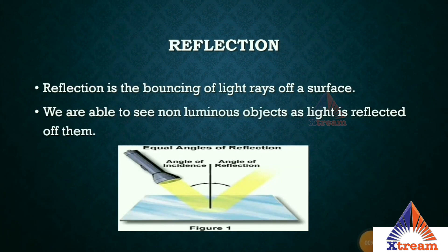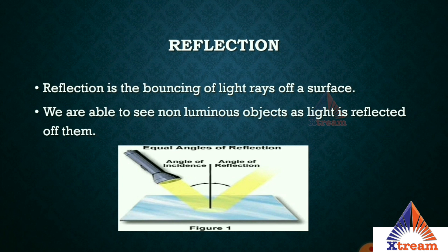What is reflection? What is it about objects that lets us see them? If an object does not emit its own light, it must reflect light in order to be seen. For example, the walls in your room do not emit their own light, so in order to be seen, they must reflect light from a light source in your house or from the sun.